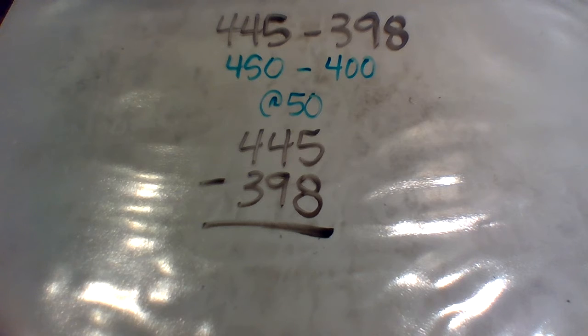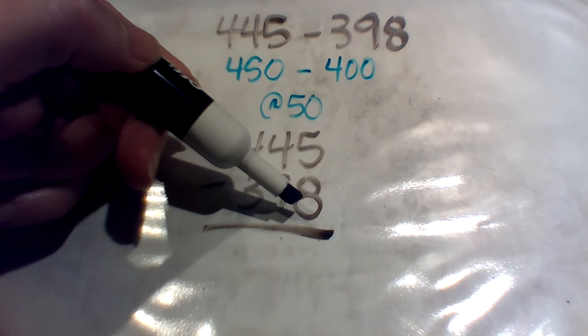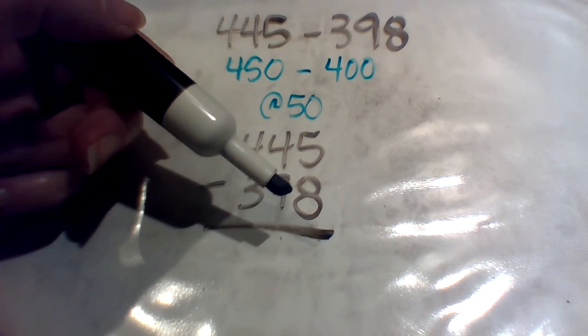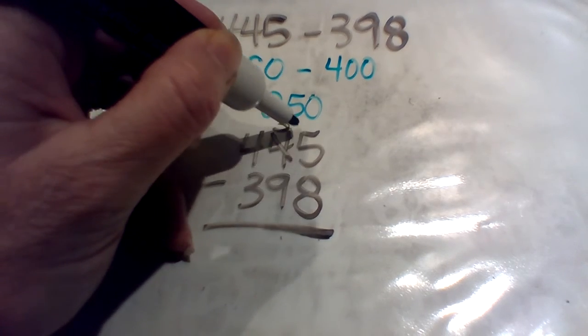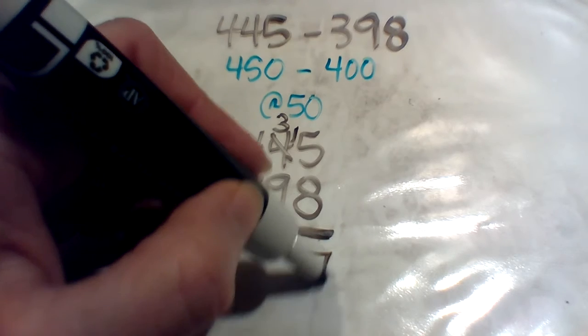So I'm going to write my problem. Remember I'm lining up my place values. And then I'm going to start on the right, five minus eight. And I cannot do that, because if I only had five, I can't take eight away. I would still owe somebody. So this would be negative. So I need to regroup. So I borrow that becomes a three. This becomes 15, 15 minus eight is seven.